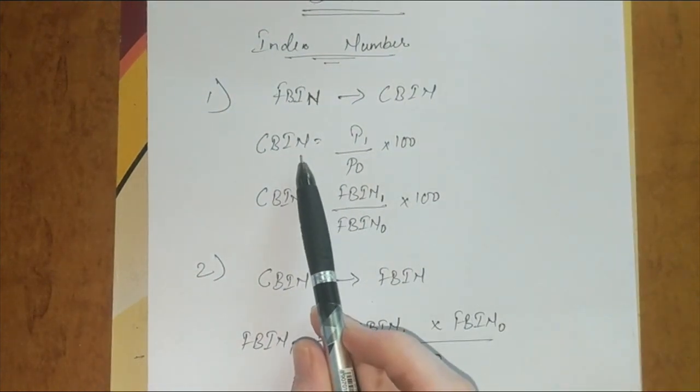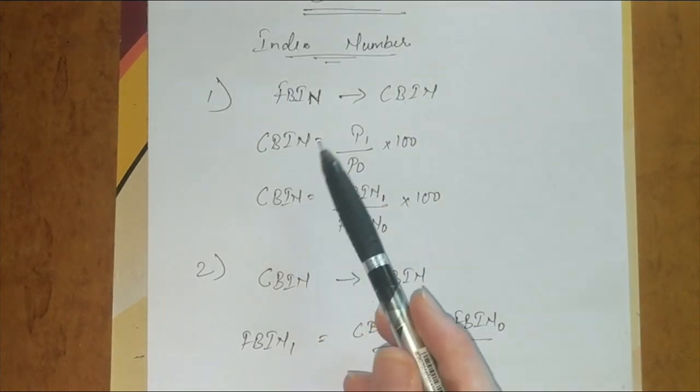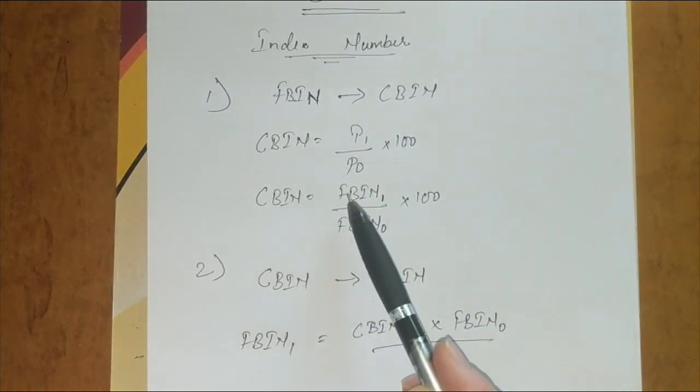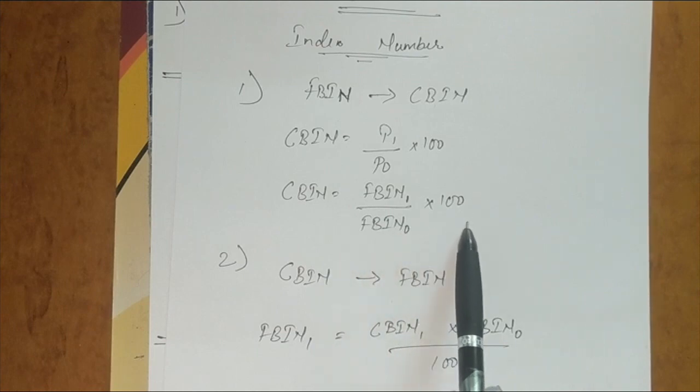First, we have seen a formula for CBN: P1 upon P0 into 100. So in conversion, if you want to convert the FBN to CBN, then it will be the same formula. CBN equals to FBN of current year upon FBN of previous year into 100.